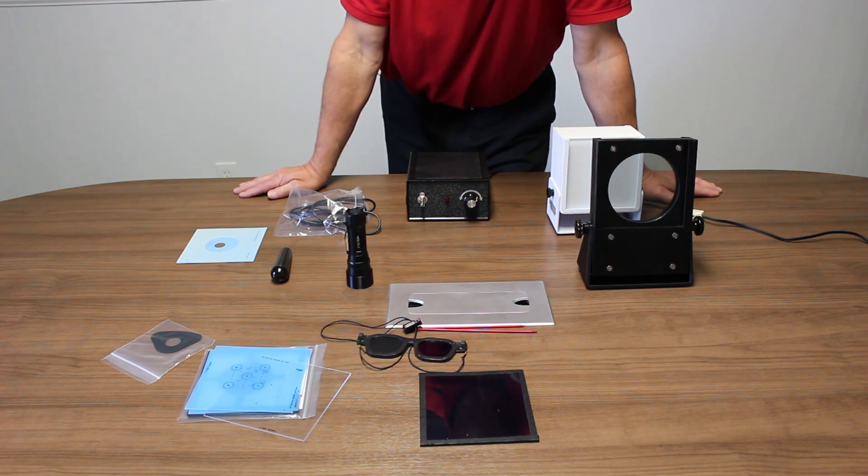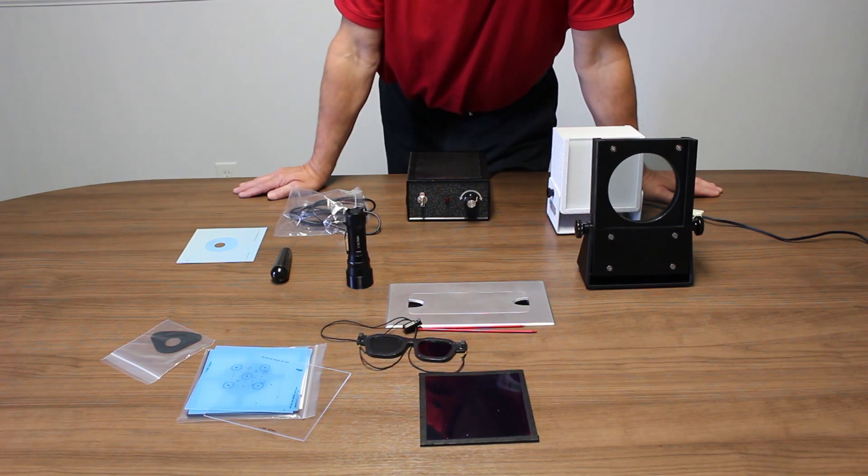The fovea is the center of the vision. We're trying to teach the patient to use it, often in amblyopia or lazy eye. We'll get something called eccentric fixation. This device is used to both test for and train eccentric fixation.